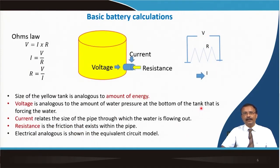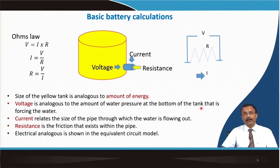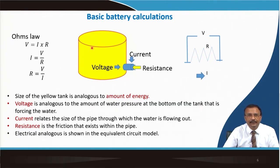We can have some basic battery calculations based on Ohm's law: V = I × R, so I = V/R and R = V/I. The yellow tank shown is analogous to the amount of energy the battery stores — like a big tank filled with water.